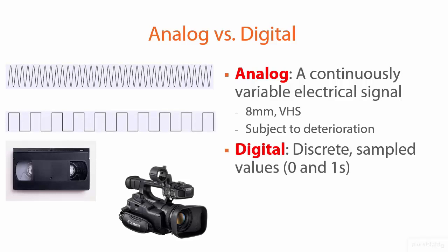By contrast, digital signals have the video encoded as sampled values — 0s and 1s — and the digital waveform looks like a series of blocks: on, off. And the more you sample per unit time, the richer the video stream.